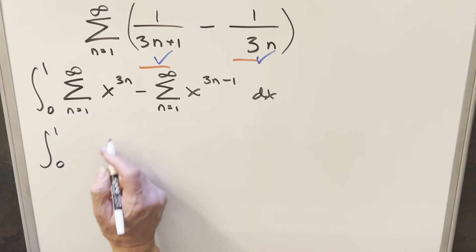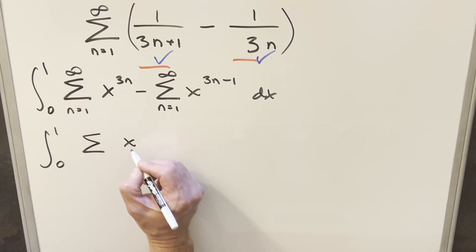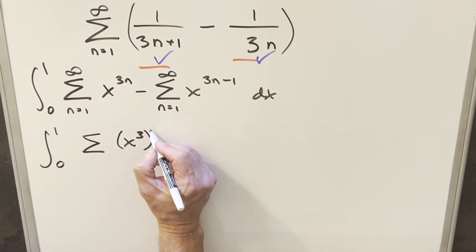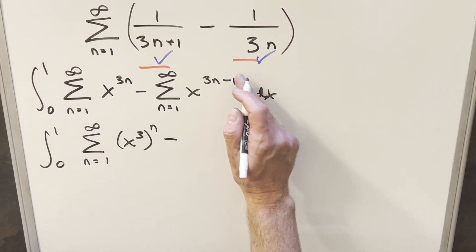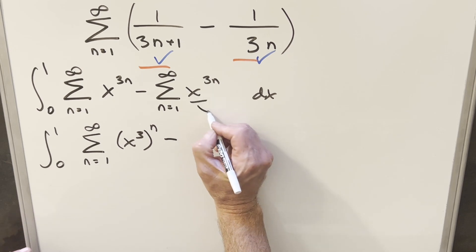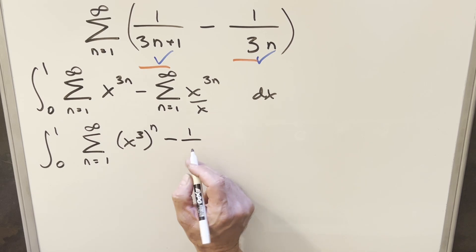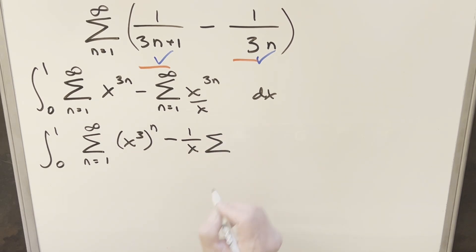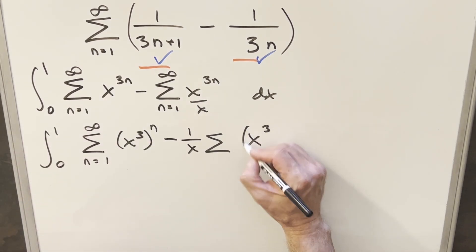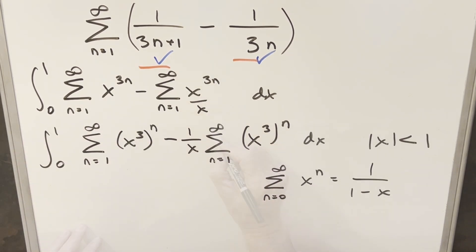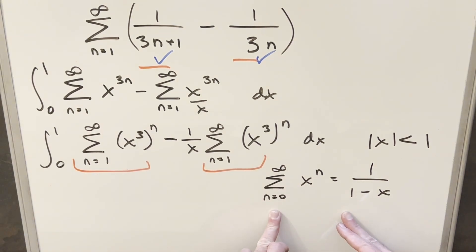Now each of these is starting to look like a geometric series. For the first sum, instead of writing x to the 3n, by exponent properties I can write it as (x cubed) to the n. For the second sum, I can break off the minus 1 in the exponent as a factor of 1 over x, pull that in front of the sum, and write the remaining part as (x cubed) to the n. This is now very similar to the geometric series formula.